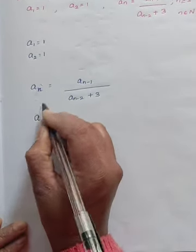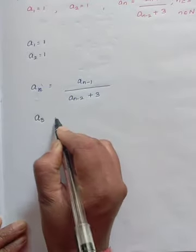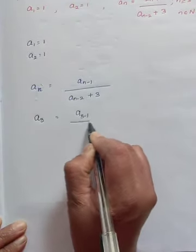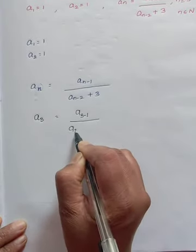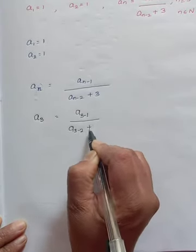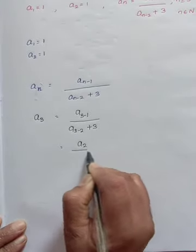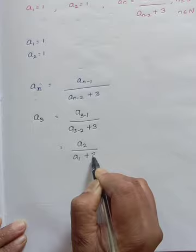In the place of n, let us write 3. A3 equals A base 3 minus 1 divided by A3 minus 2 plus 3. That is A base 2 by A base 1 plus 3.